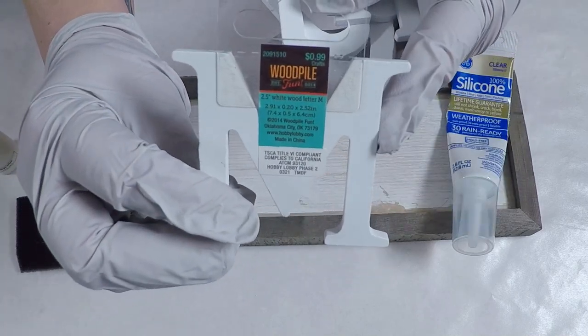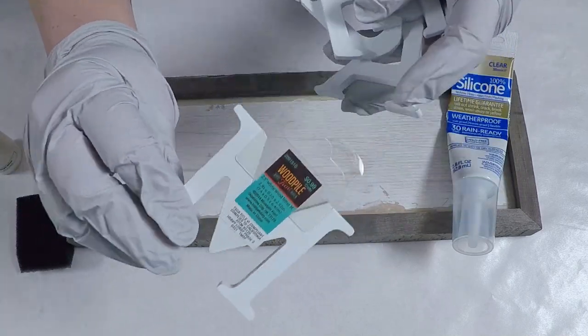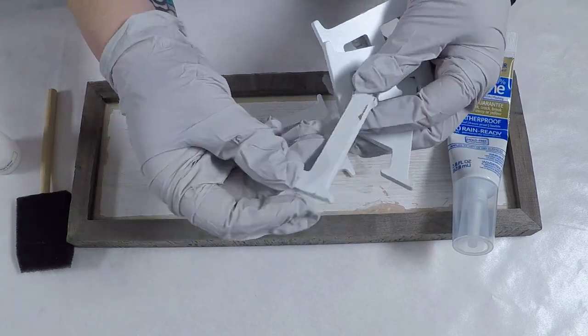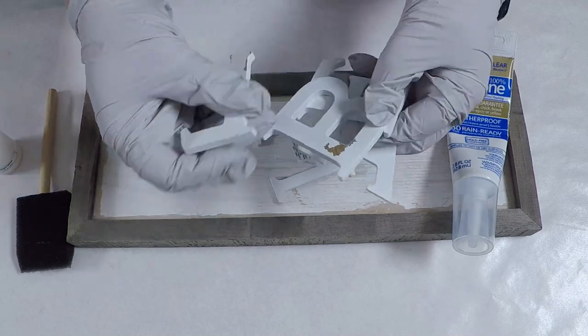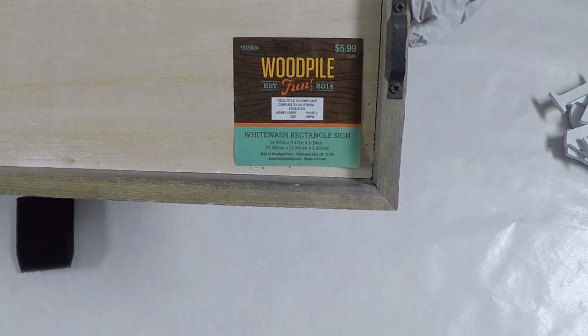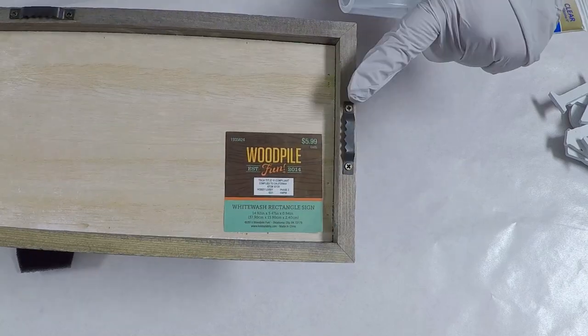I got these wood pile two and a half inch wood letters and whitewash rectangle sign from Hobby Lobby. The stickers tend to rip off the finish on the letters so keep an eye on that. You can often find both the letters and the sign on sale. The sign comes ready to hang so there's no extra work or parts needed for that.